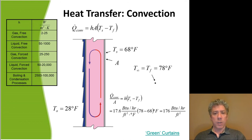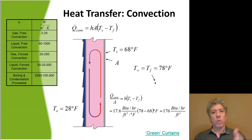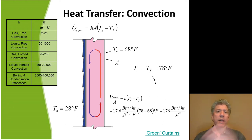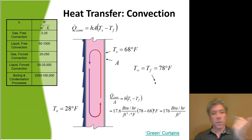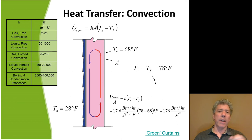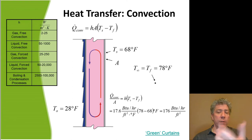Let's talk about convection next — one of our other mechanisms for heat transfer. Here we use something called Newton's Law of Cooling. Q-dot convection equals H times the area times the temperature difference, where H is the convective heat transfer coefficient. It's not a material property — it's a very complicated property of temperature, geometry, and the surface in contact with the solid.